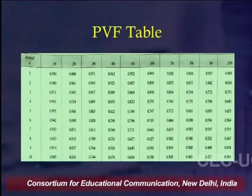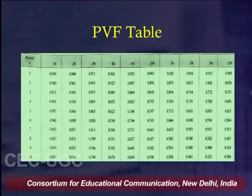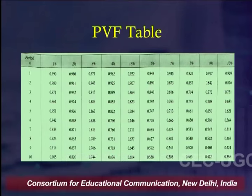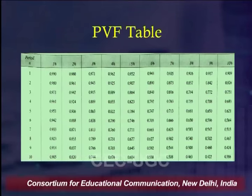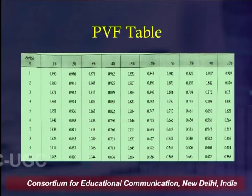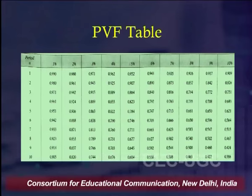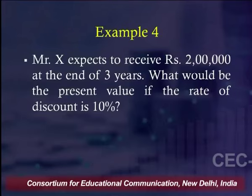We get the PVF value from the PVF table, the third type of table being introduced today. It is available at the end of any financial management textbook. Similar to CVF and CVAF tables, columns show time periods and rows show the rate of return. We find the intersection value to use in our calculation.